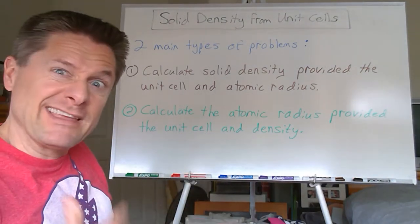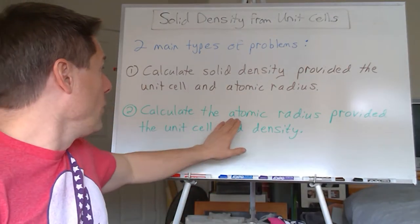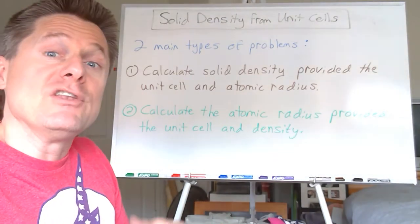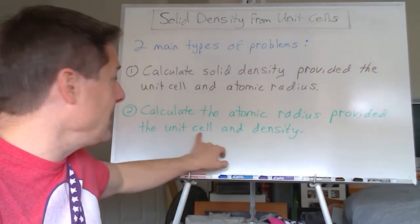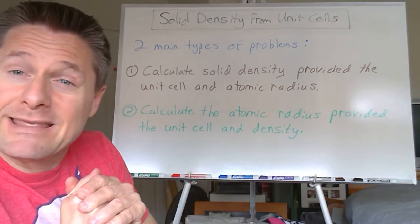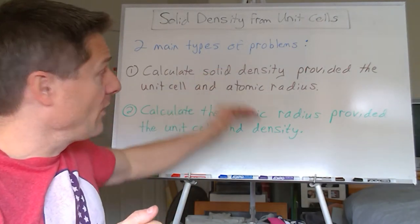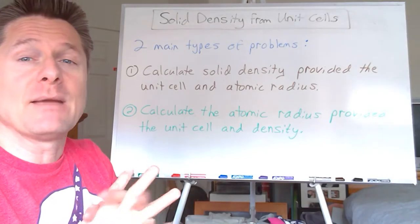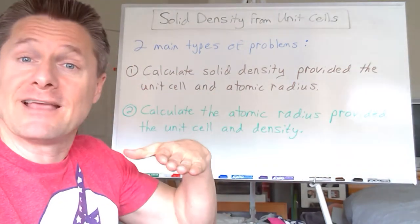Or I can flip it around, which I think is a little bit tougher but still doable: calculate the atomic radius. Say we don't have that information, but we do have the experimental density and we know what type of unit cell it is. We should be able to estimate the atomic radius. There's really nothing new here — we've already learned everything it takes to do these calculations. So let's do one example of each to show you the process.